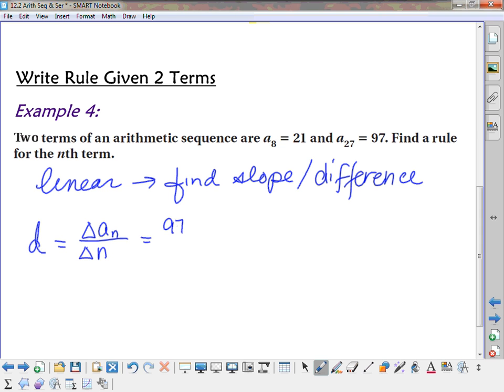So, a sub n, I went from 21 to 97. So, I'll just do 97 minus 21. And those were terms 27 and terms 8. So, in other words, I went this distance, and it was this many terms. I just have to divide by how many terms it was to figure out how much I moved for each one. So, 97 minus 21, we get 76, and 27 minus 8, we get 19. And so, that comes out to a common difference of 4. And now I'm going to use the same thing that we did before. I just have to find a sub 0 so that I can write my equation.